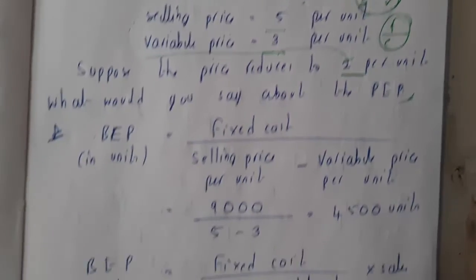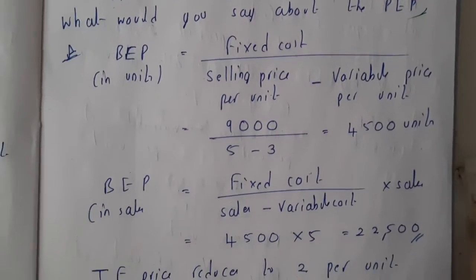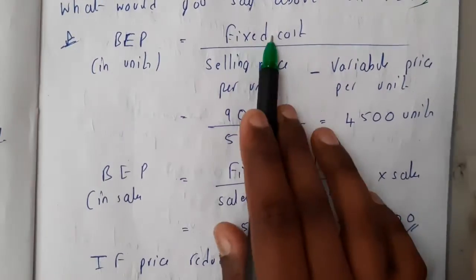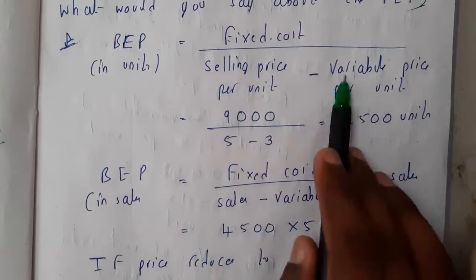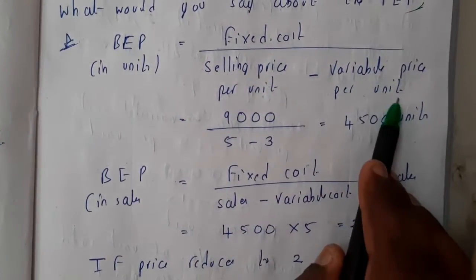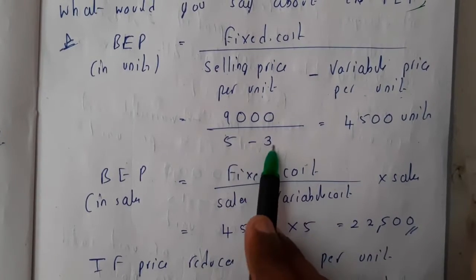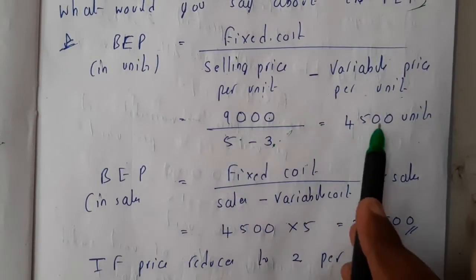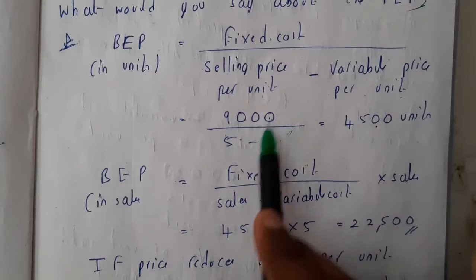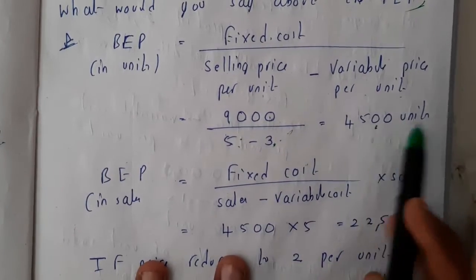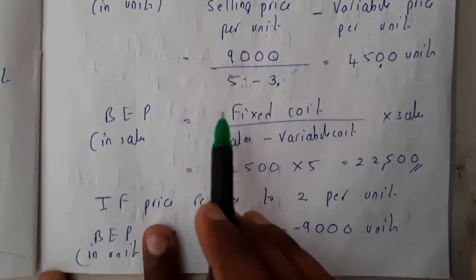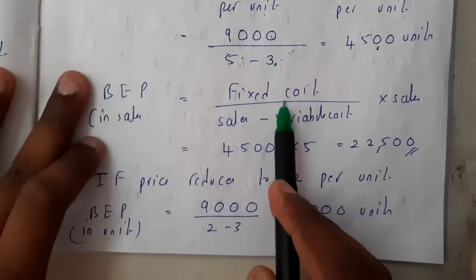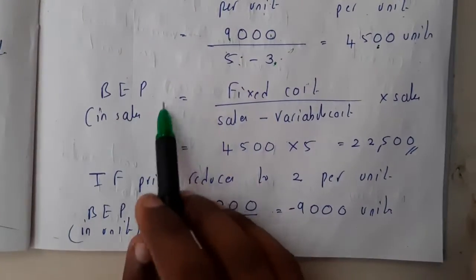We know the formula for BEP in units: fixed cost divided by (selling price per unit minus variable cost per unit). So 9,000 divided by (5 minus 3) = 9,000 divided by 2 = 4,500 units.